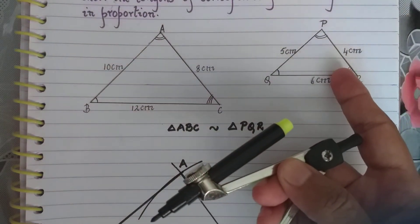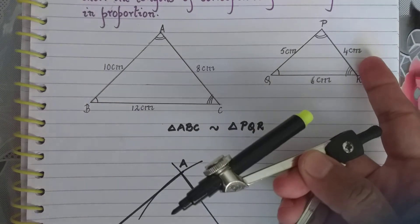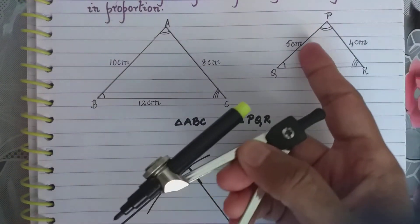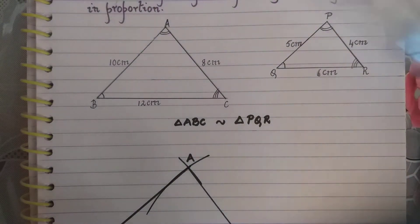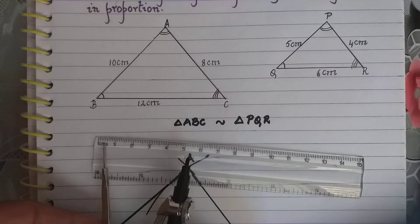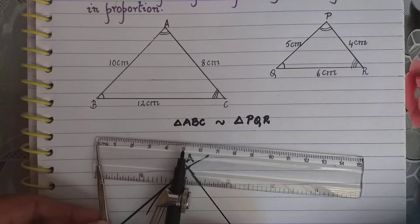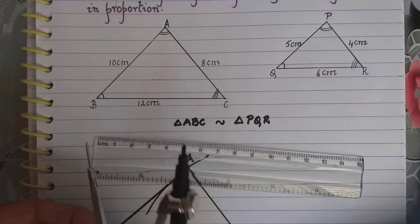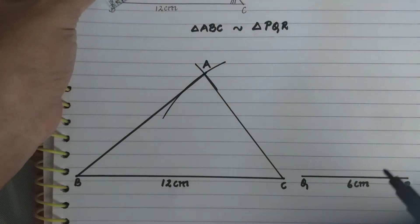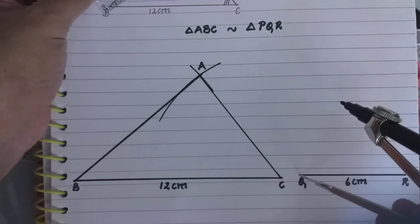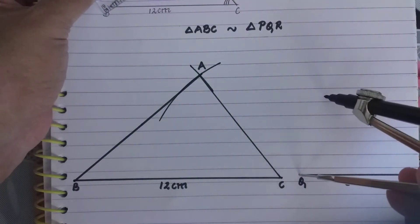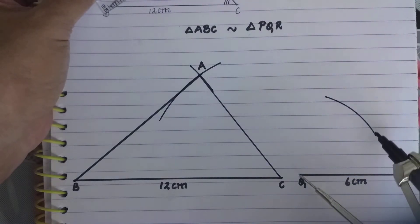Now for the next triangle, I have 5 cm and 4 cm. So I take the scale and measure 5 cm. At point Q, I keep the point and draw one arc.